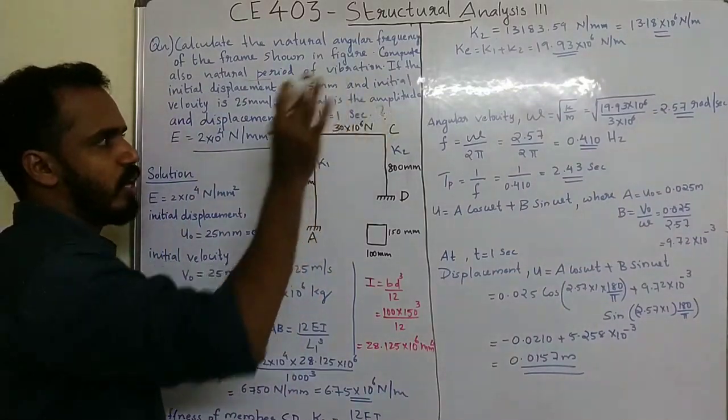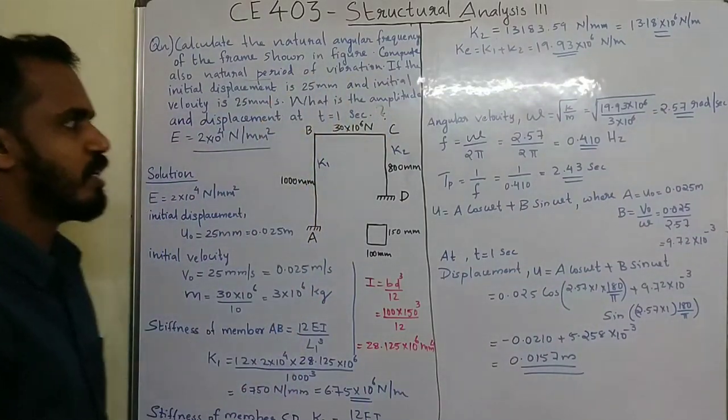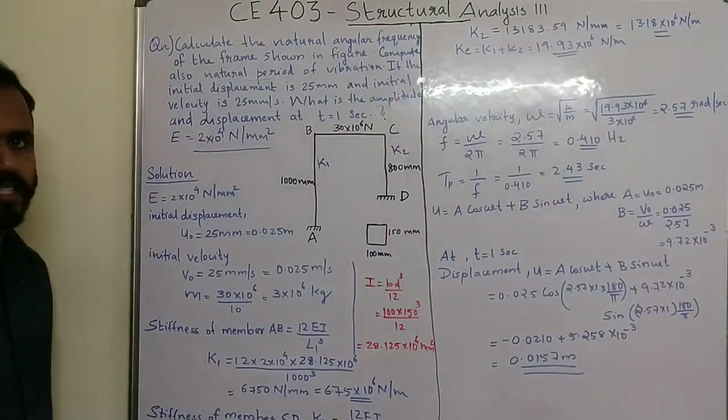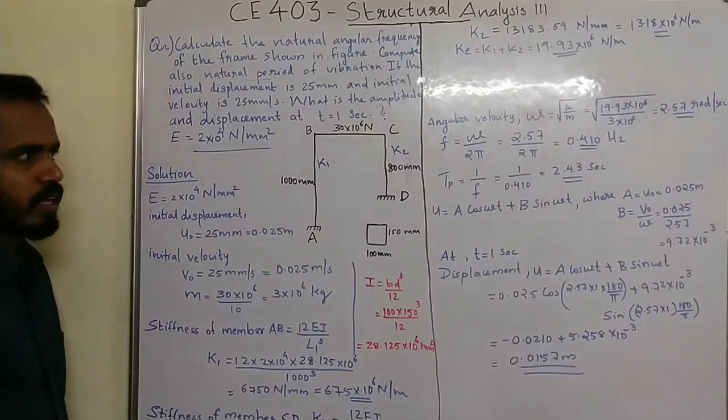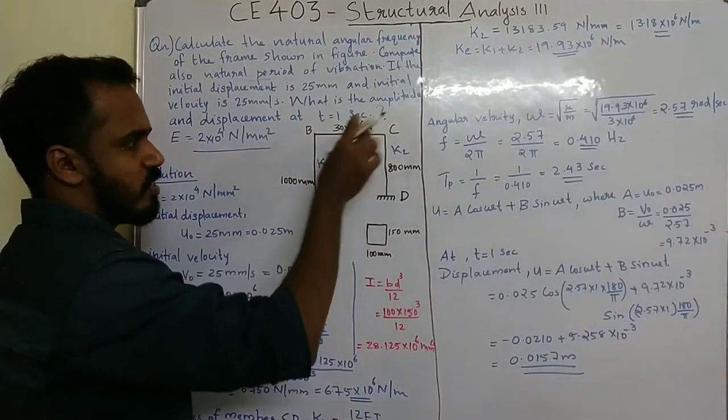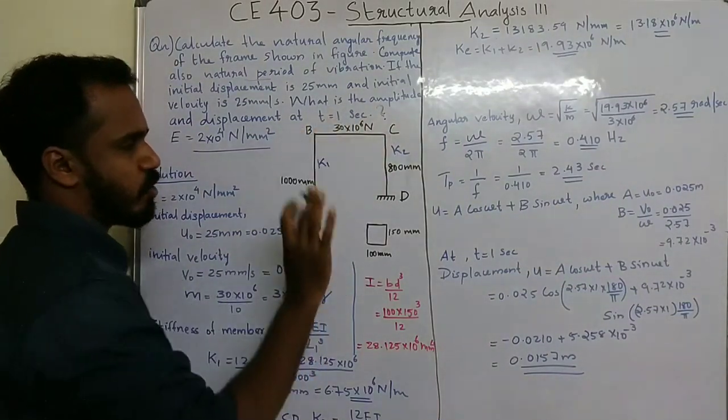The load is 13 into 10 raised to 6 newton. If the individual members are K1 and K2, we have different stiffness conditions to evaluate.